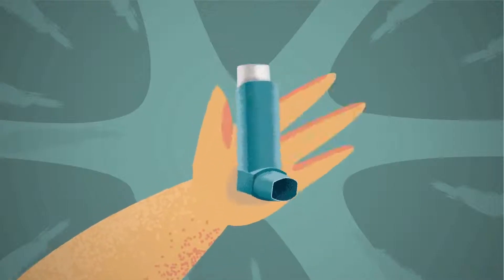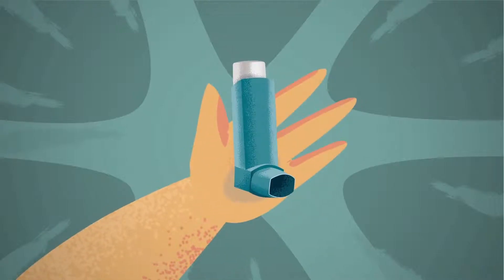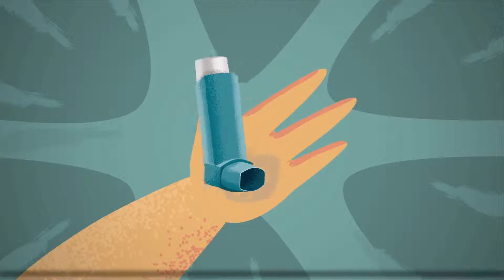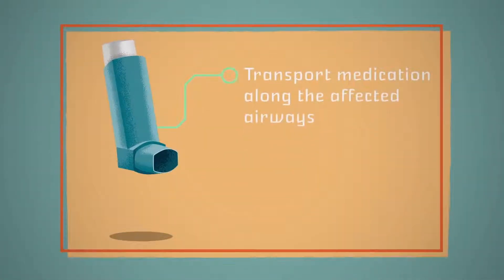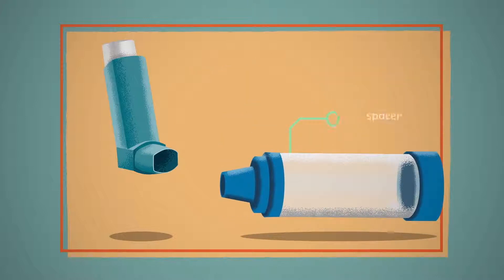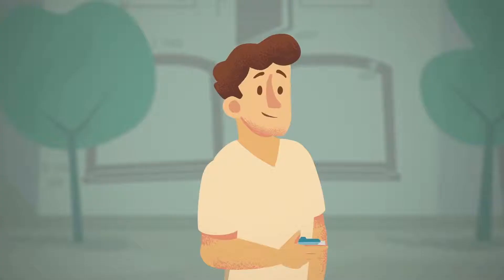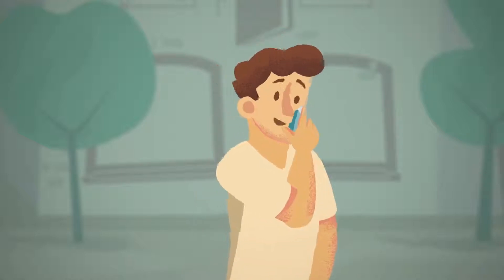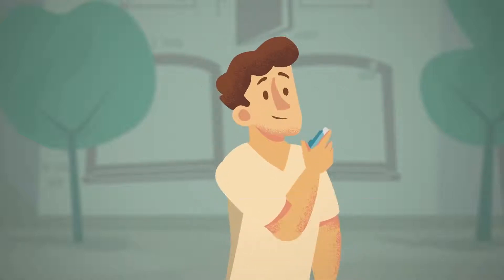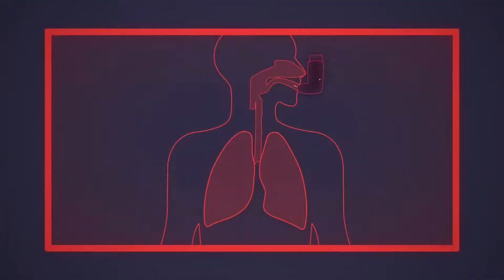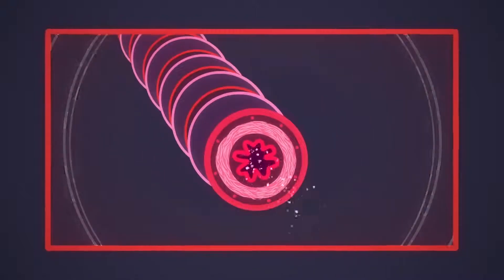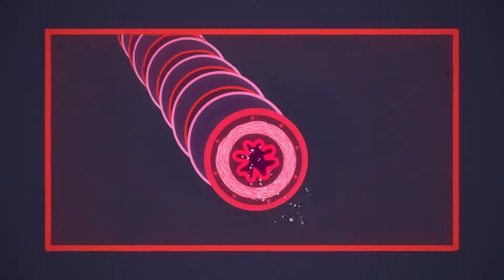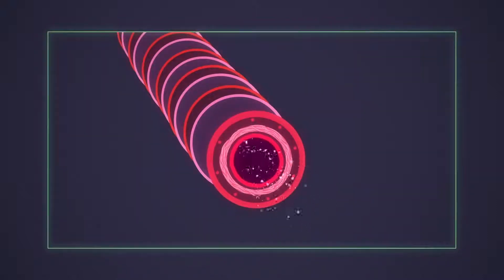These medications help asthmatics both control and prevent their asthma symptoms. Inhalers transport medication along the affected airways, using a liquid mist or fine powder to treat the problem at its source. They come in two forms. There are reliever medications, which treat symptoms immediately and contain beta agonists. Beta agonists relax constricted muscles, allowing the airways to widen so more air can travel into and out of the lungs.